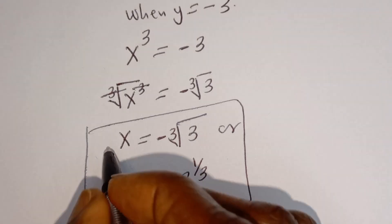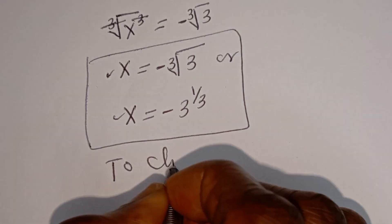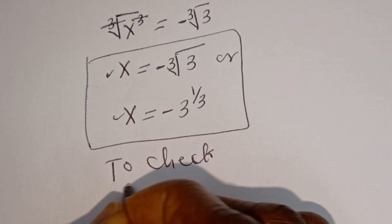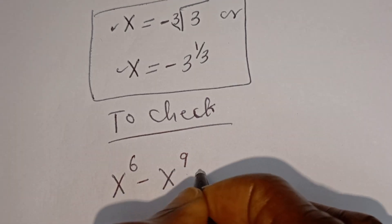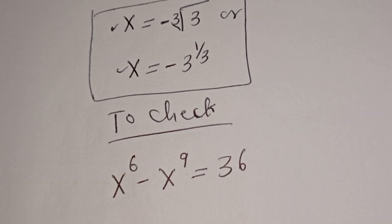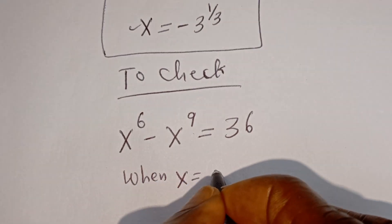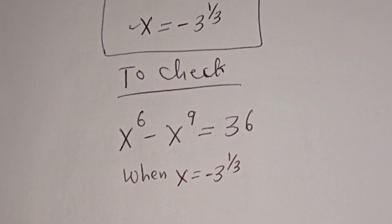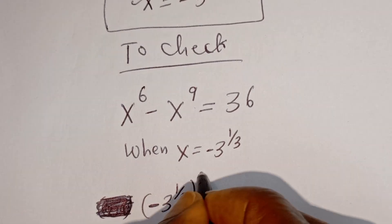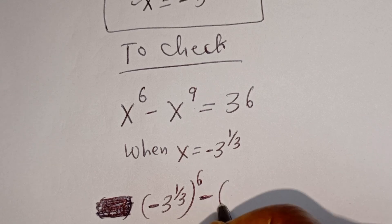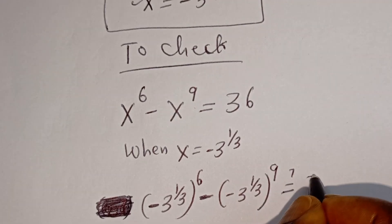We can check to confirm if this answer is correct. The given equation is s to the power of 6 minus s to the power of 9 equals 36. When s equals minus 3 to the power of 1 over 3, we substitute: minus 3 to the power of 1 over 3, all to the power of 6, minus minus 3 to the power of 1 over 3, all to the power of 9, must equal 36.